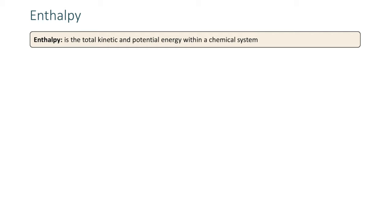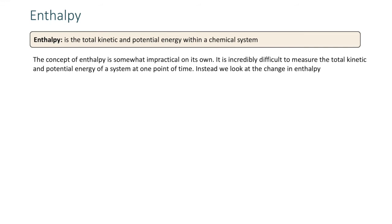Now we'll move on and talk about enthalpy. Enthalpy is the total kinetic and potential energy within a chemical system. The concept of enthalpy is somewhat impractical on its own, because it's hard to measure the total kinetic energy and potential energy of a system at one point in time.